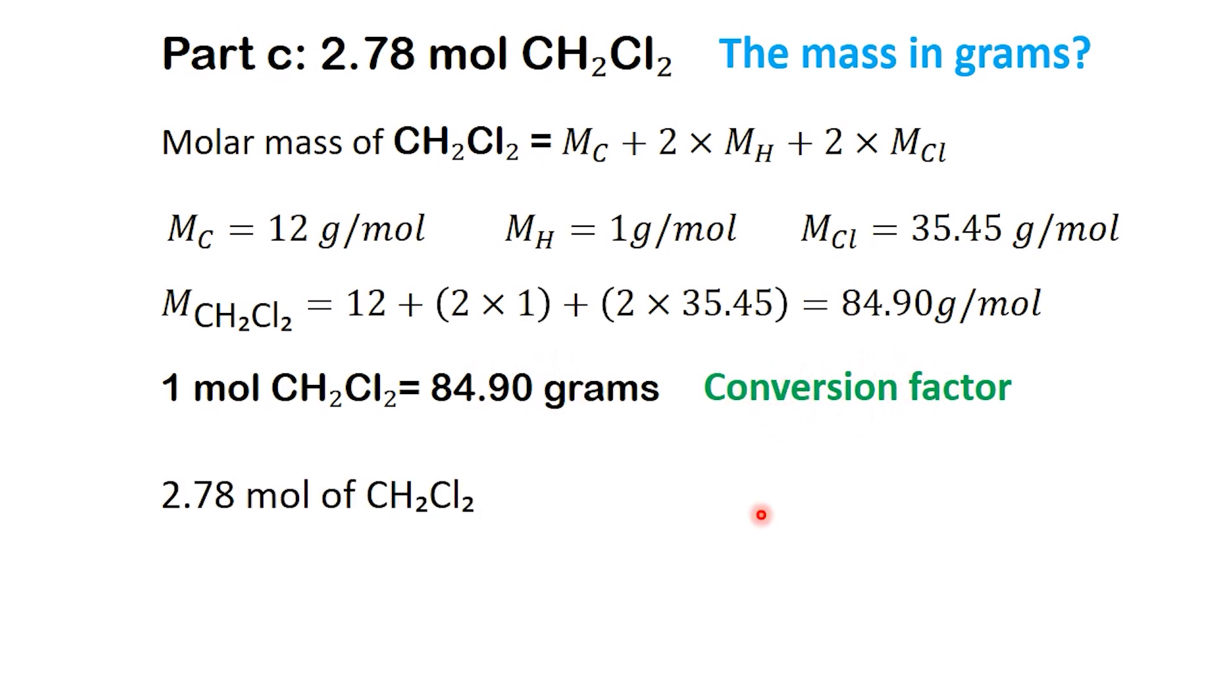Step 2: Write what we're given. We're given 2.78 moles of CH2Cl2. We want to convert moles into grams. Now we use the molar mass as a conversion factor.